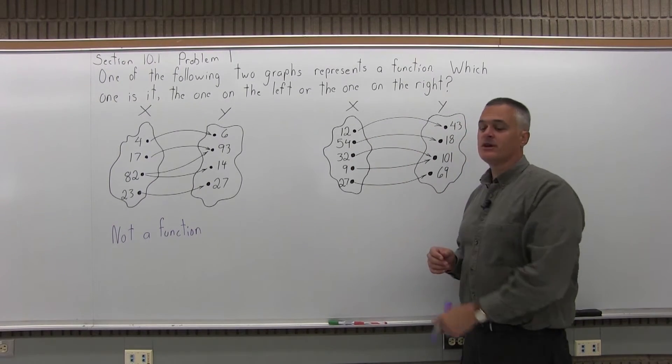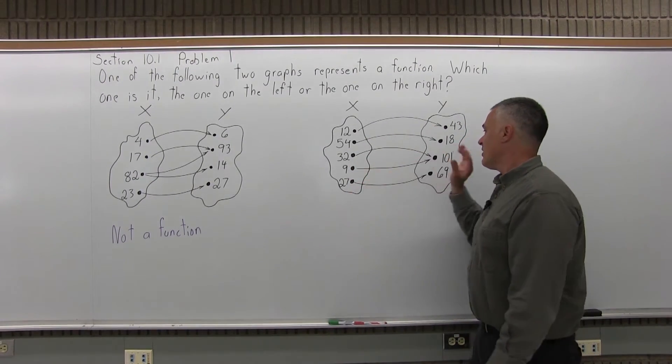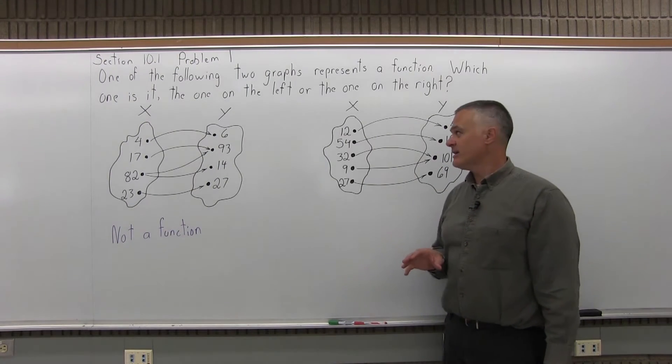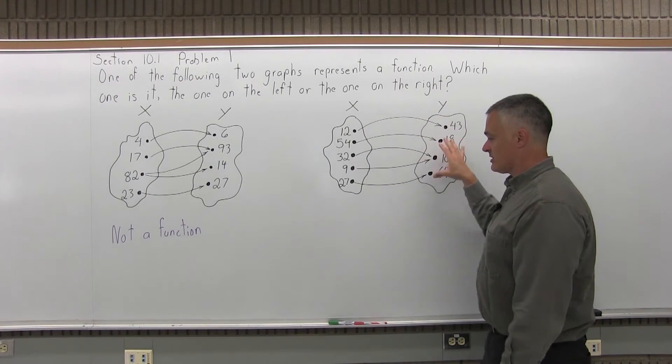If you put in a 32, only one thing comes out. And if you put in a 9, only one thing comes out. That's alright. That's not a problem. And every other thing only goes to one thing.